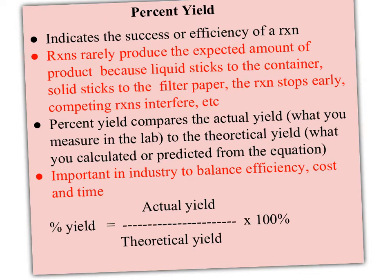The actual yield is what you would measure in the lab, what you actually got. And then the theoretical yield is what we've been calculating. That's what we've been doing with stoichiometry. It's what you calculate or predict from the equation based on what you put in, based on your limiting reactant.